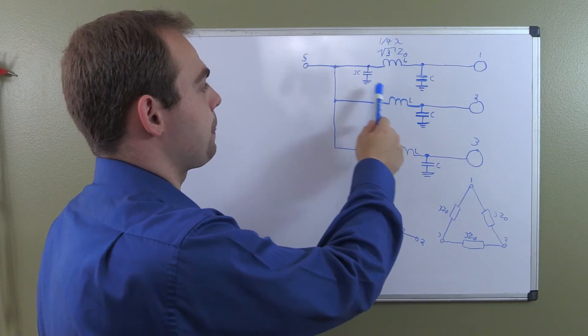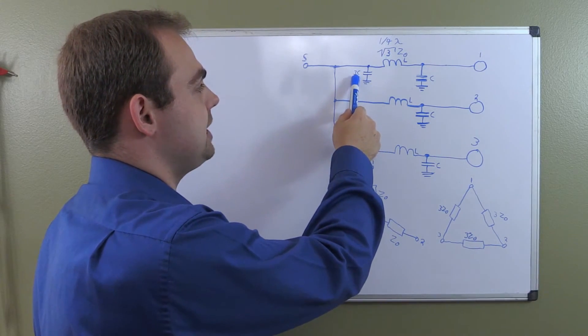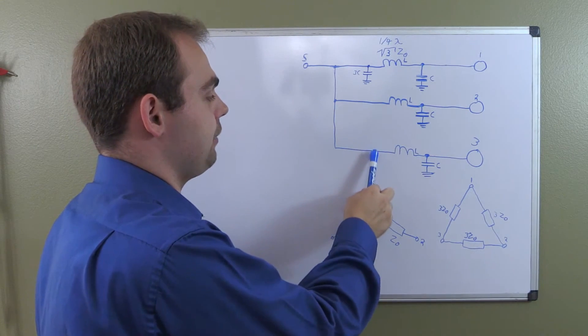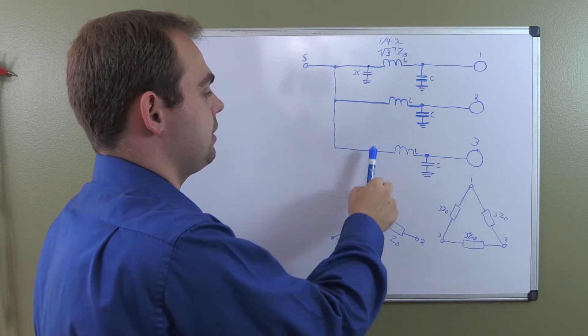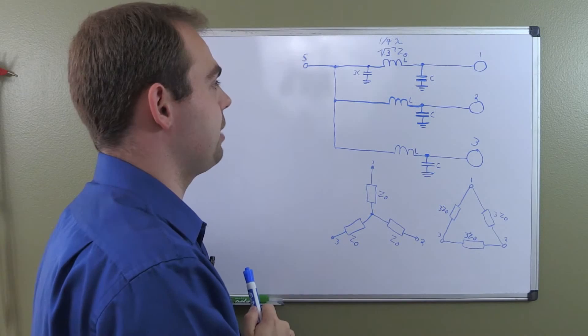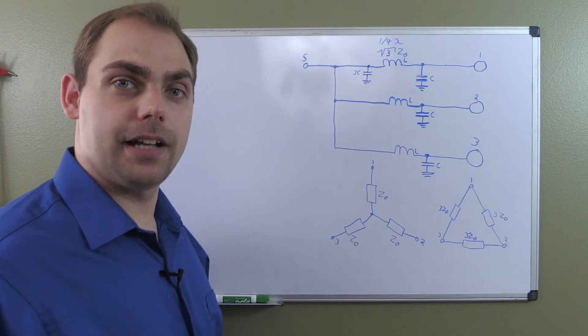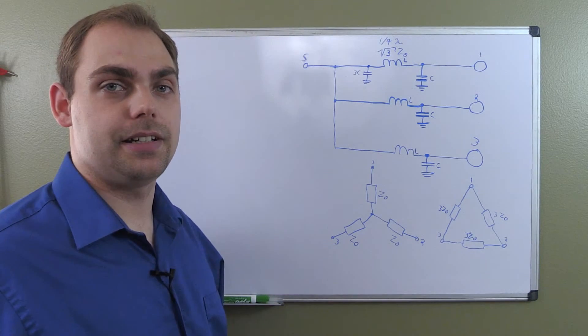We have our pi network here. The input is now, this capacitor right here is 3C. Because you would have a cap here, a cap here, and a cap here with the value C. And to simplify, you just remove them and put one capacitor up there with the value of 3C. Kind of like we did with our two-way splitter. It's the exact same principle and calculated the exact same way.